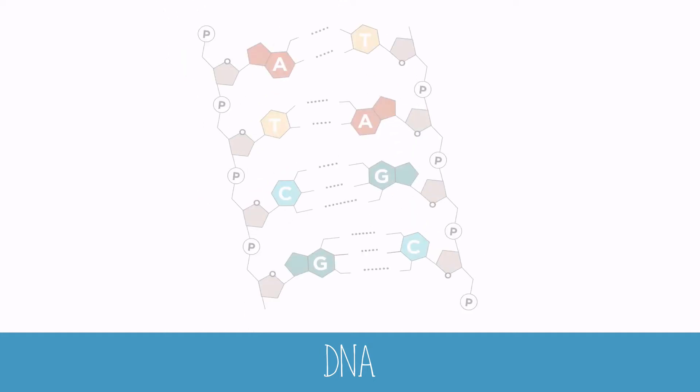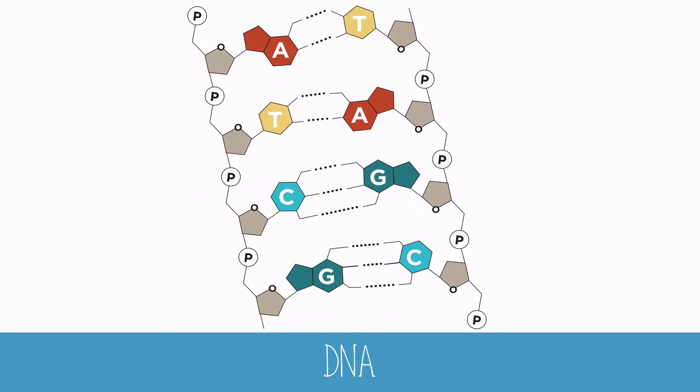So on this bit of DNA, the 3' ends have the sugar and the 5' ends have the phosphate molecule. The two strands of DNA are anti-parallel, so the 5' and 3' ends are opposite in each strand. Now that we've reviewed some important DNA information, we can look at DNA replication.